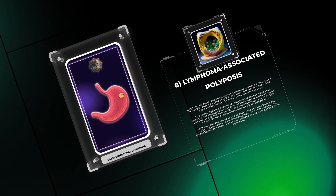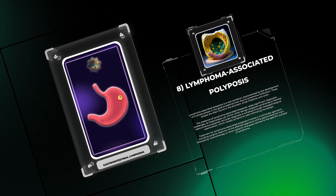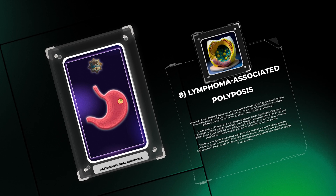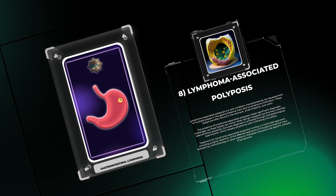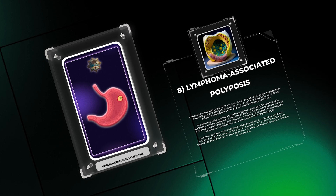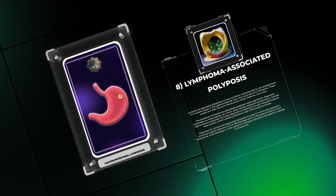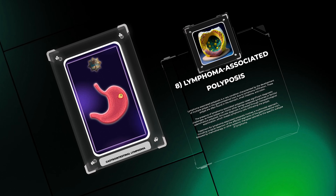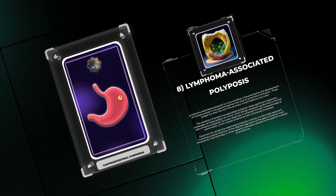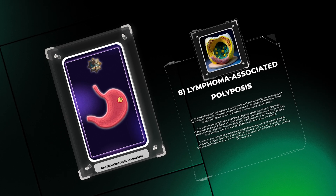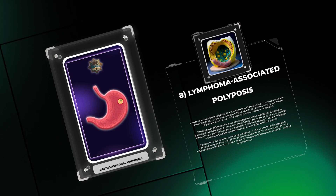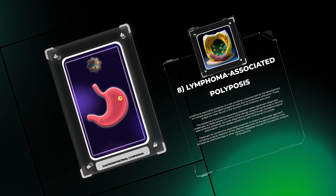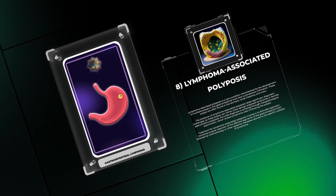Lymphoma-associated polyposis is a rare condition characterized by the development of multiple polyps in the gastrointestinal tract due to lymphoma infiltration. These polyps are often found in the stomach, small intestine, and colon. Their presence raises significant diagnostic challenges, as they can mimic other benign polyposis syndromes or familial adenomatous polyposis. Accurate diagnosis is achieved through histopathological examination, which reveals lymphoma cells infiltrating the polyps. Treatment involves surgical resection of affected segments followed by chemotherapy or other systemic therapies.